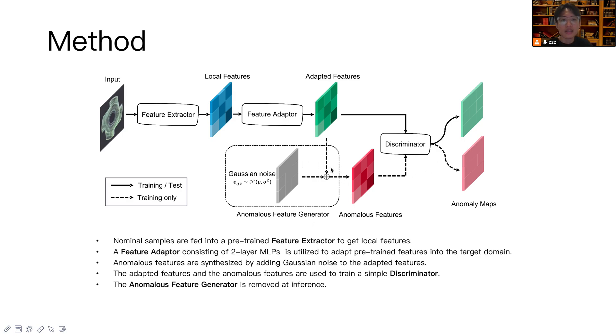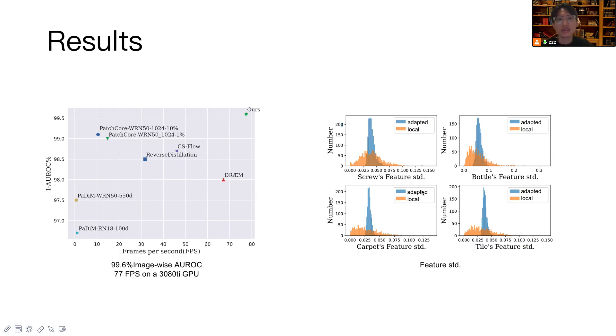So here's our result. The left shaker shows that our method can not only achieve the highest performance on the competitive AmiTek anomaly dataset, but also achieve the highest FPS. The figure on the right shows that features after the feature adapter have lower standard deviation, showing the effectiveness of our adapter.